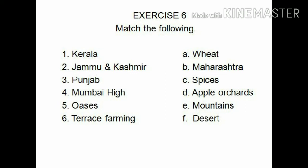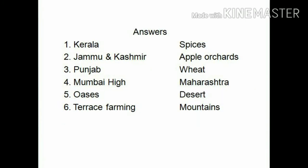Column B: Number 1 - Wheat, Number 2 - Maharashtra, Number 3 - Spices, Number 4 - Apple orchards, Number 5 - Mountains, Number 6 - Deserts. Answers: Kerala - Spices; Jammu and Kashmir - Apple orchards; Punjab - Wheat; Mumbai High - Maharashtra; Oasis - Desert; Terrace farming - Mountains.